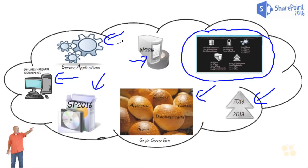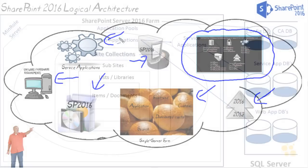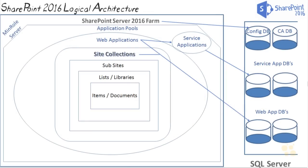The last thing I want to do in this nugget is talk about the logical architecture. It's pretty similar to what we had in previous versions, but I want to make sure everyone is on the same page when we're talking about web apps, service apps, SQL Server, and site collections. The SharePoint 2016 logical architecture includes both the SharePoint farm and SQL Server. Without SQL Server we can't have SharePoint, because everything we work with and all the content applied to lists and libraries is stored in SQL Server.